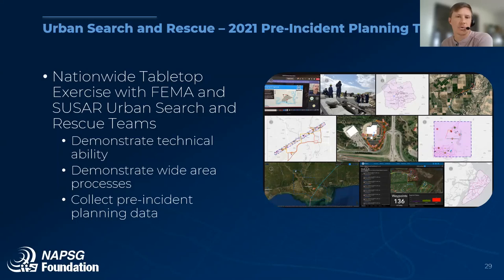We had teams from across the country participate, then came together for an after-action review to debrief. It was a great exercise in deploying the tools and got people ready for real-world events. We deployed the same tools not long after at the Surfside building collapse, and then again at Hurricane Ida, where we brought 33 separate federal, state, and local search and rescue teams together under one platform for data collection. This large-scale exercise really helped prepare us for those real-world events.